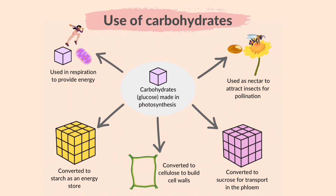This diagram illustrates how the carbohydrates made in photosynthesis are used and stored. Glucose made in photosynthesis may be used in respiration to provide energy. It may be converted to starch as an energy store, converted to cellulose to build cell walls, converted to sucrose for transport in the phloem, or used as nectar to attract insects for pollination.